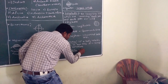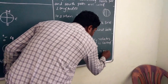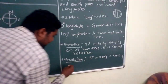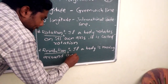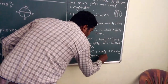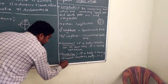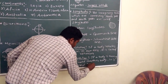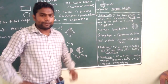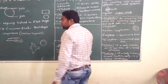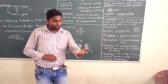Coming to revolution — if your body is moving around another body, then it is called revolution. I told you: I am a body able to rotate on my own axis — that is rotation. But if you take this body and it is moving around another body, so it is said to be revolution.